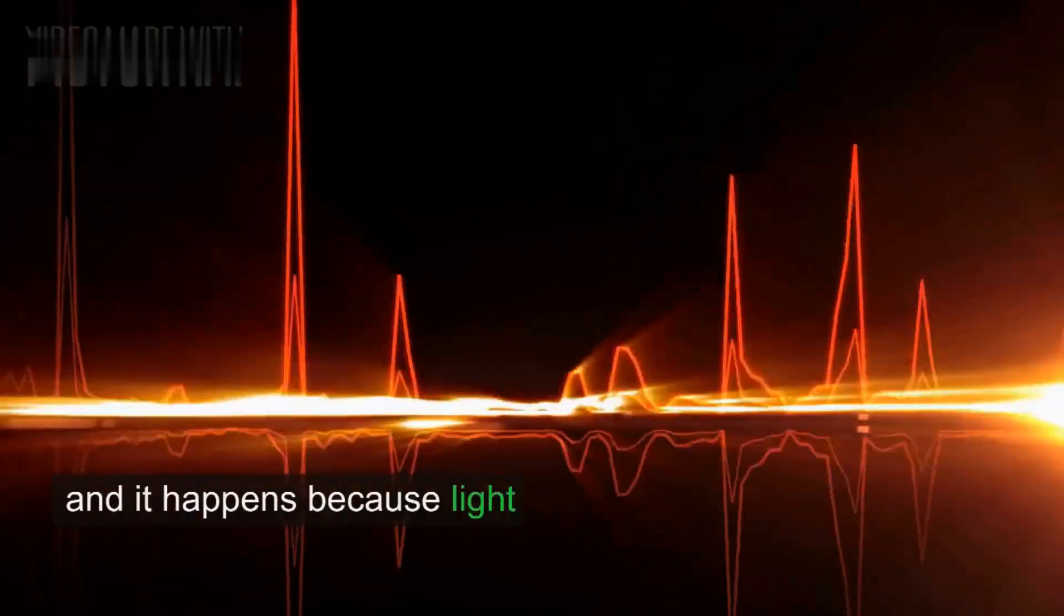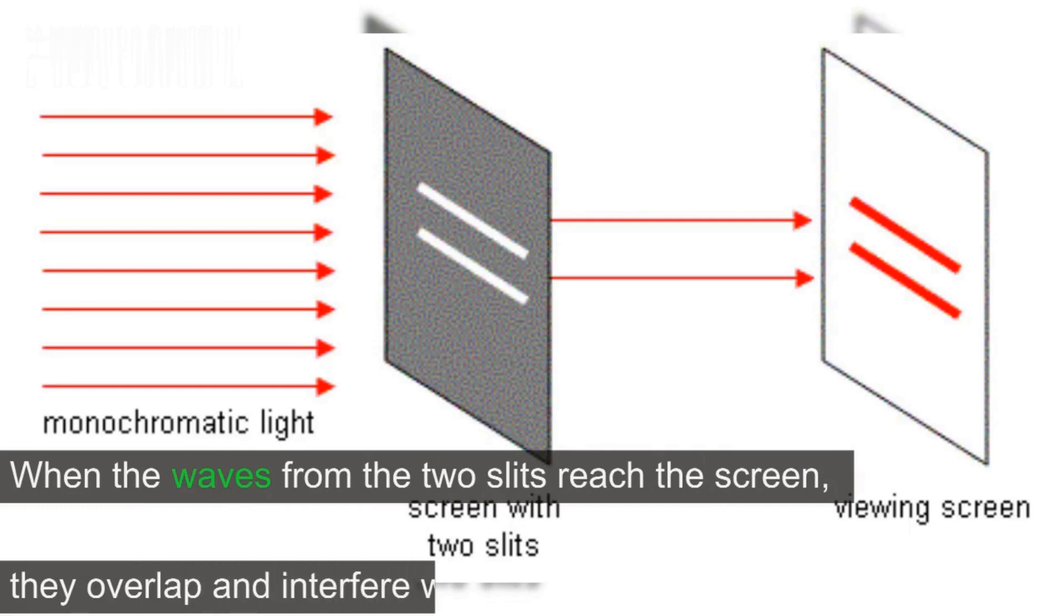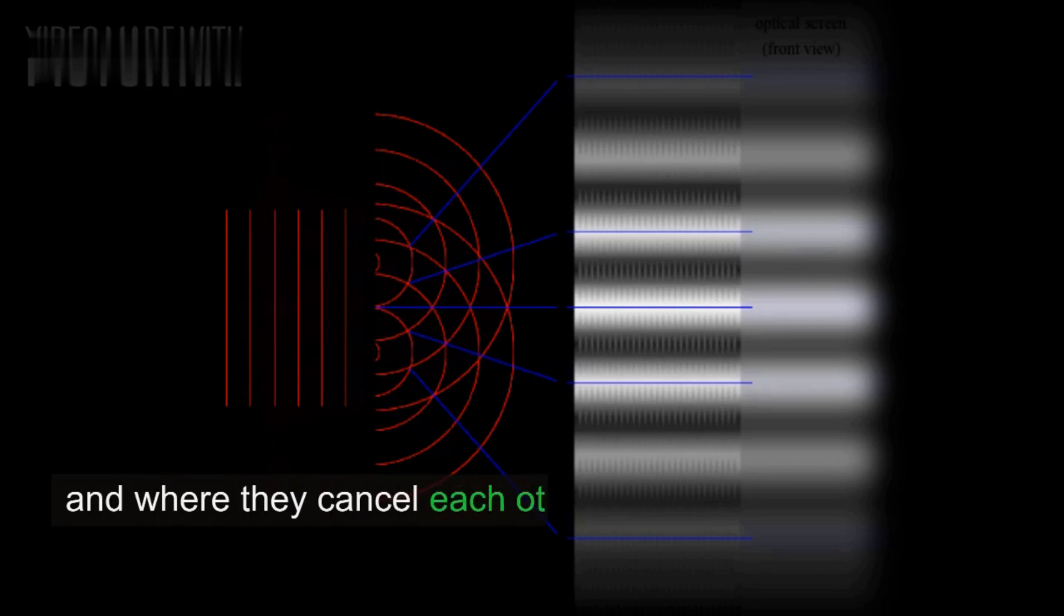This pattern is called an interference pattern, and it happens because light behaves like a wave. When the waves from the two slits reach the screen, they overlap and interfere with each other. Where the waves align and add up, you get a bright spot, and where they cancel each other out, you get a dark spot.